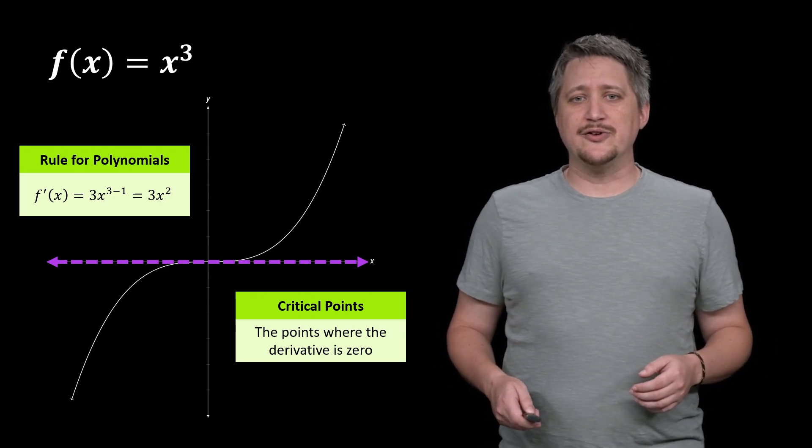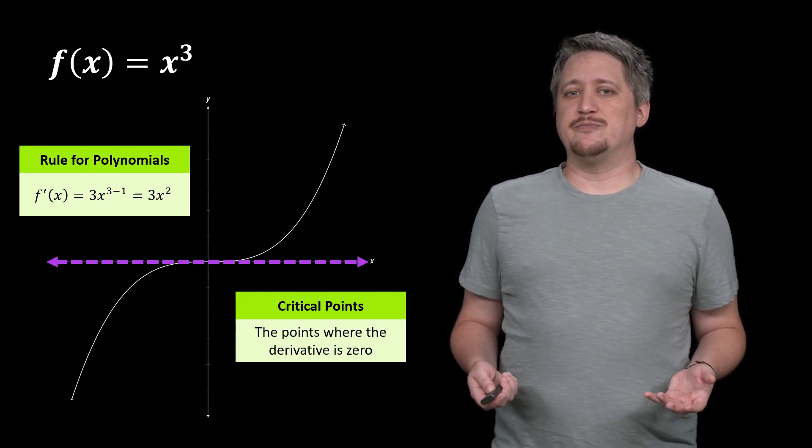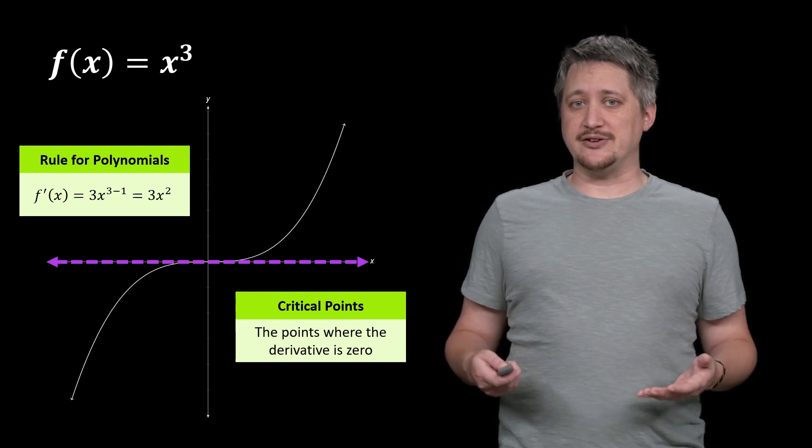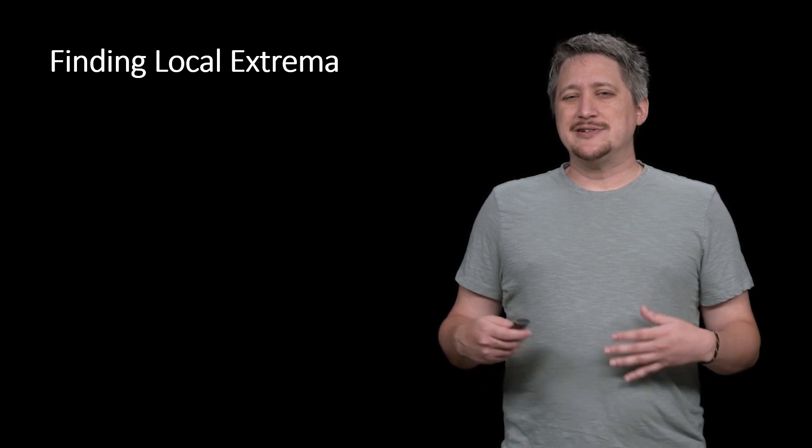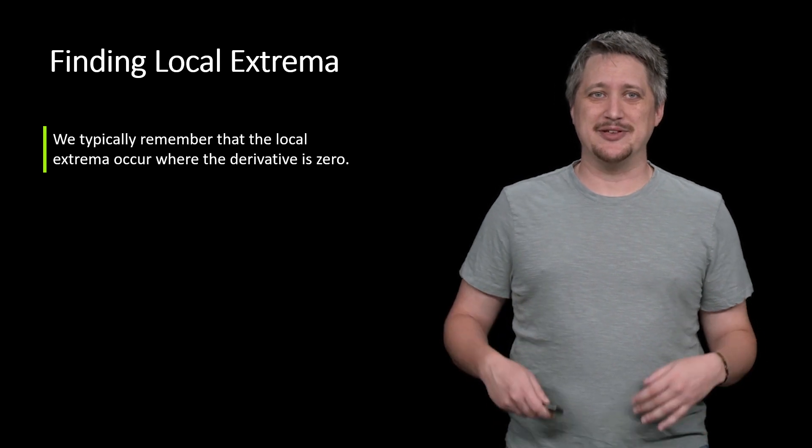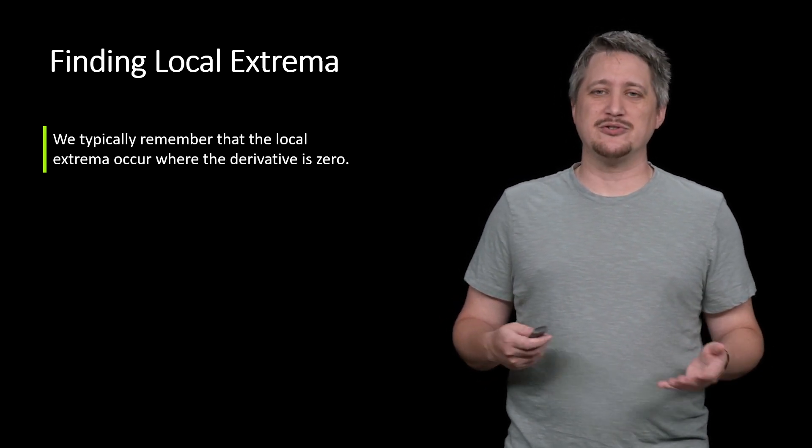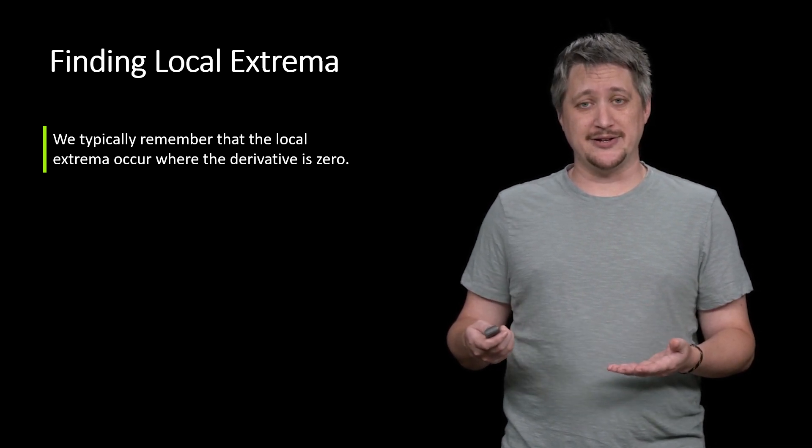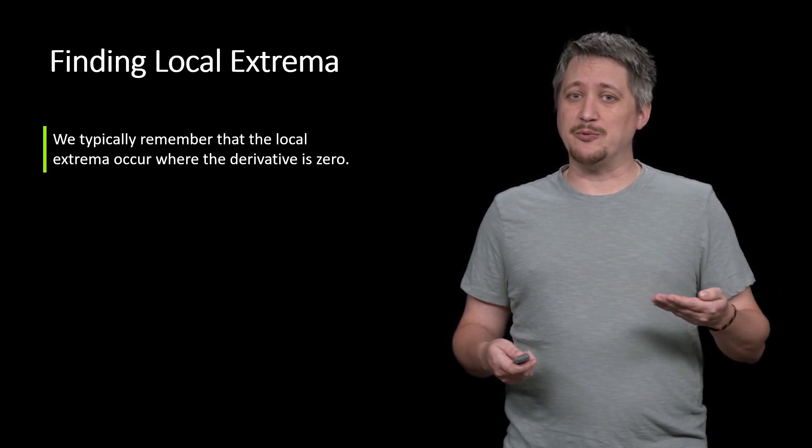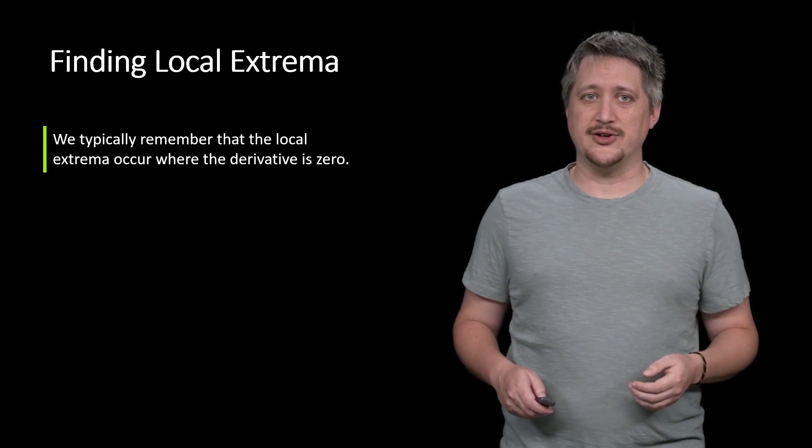Okay, so critical points are sort of potential extrema, but they aren't necessarily extrema. Alright. So typically, when this is taught, or reflected on later by students trying to take a test or something, we usually remember that the local extrema occur where the derivative is zero, because it's sort of the motivating idea. We observed right away that that tangent line was horizontal.